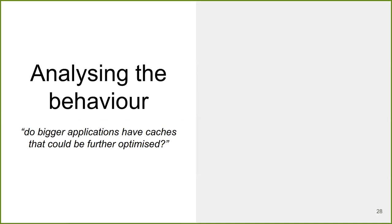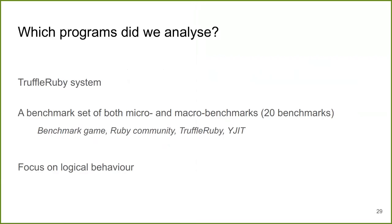Let's talk about the findings of our analysis. We want to answer whether bigger applications have caches that could be further optimized. Our setup: we switched to TruffleRuby, which has a rich benchmark set that would be applicable to the community, and it's a programming language used in industry. Our benchmark set contains both micro and macro benchmarks — some come from existing benchmark techniques, others have been developed by the Ruby or Rails community. We are only focusing on logical tools.